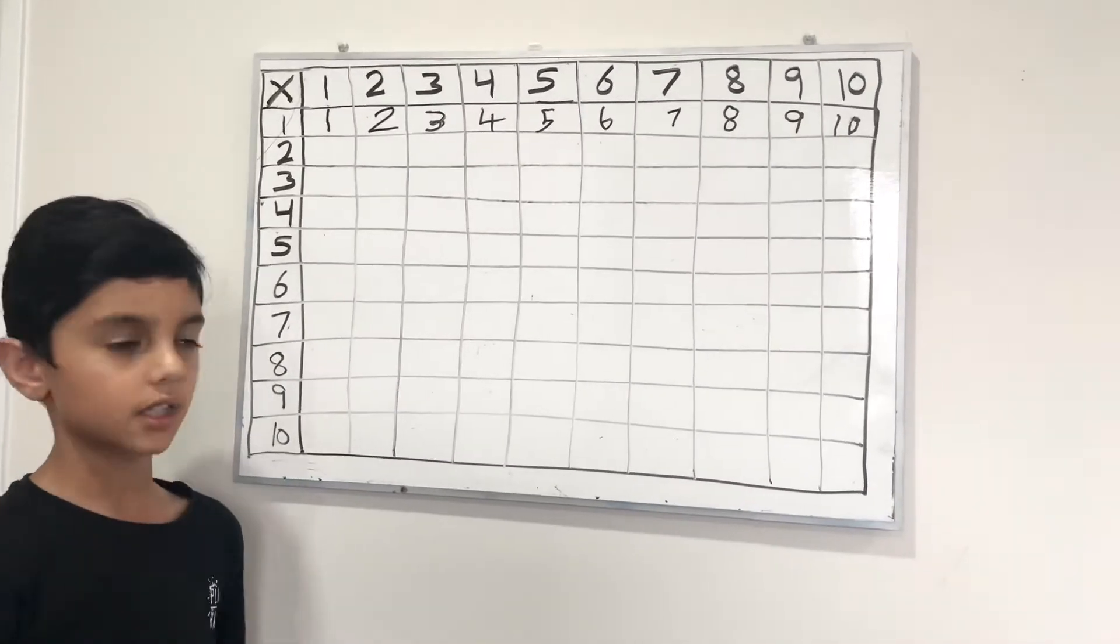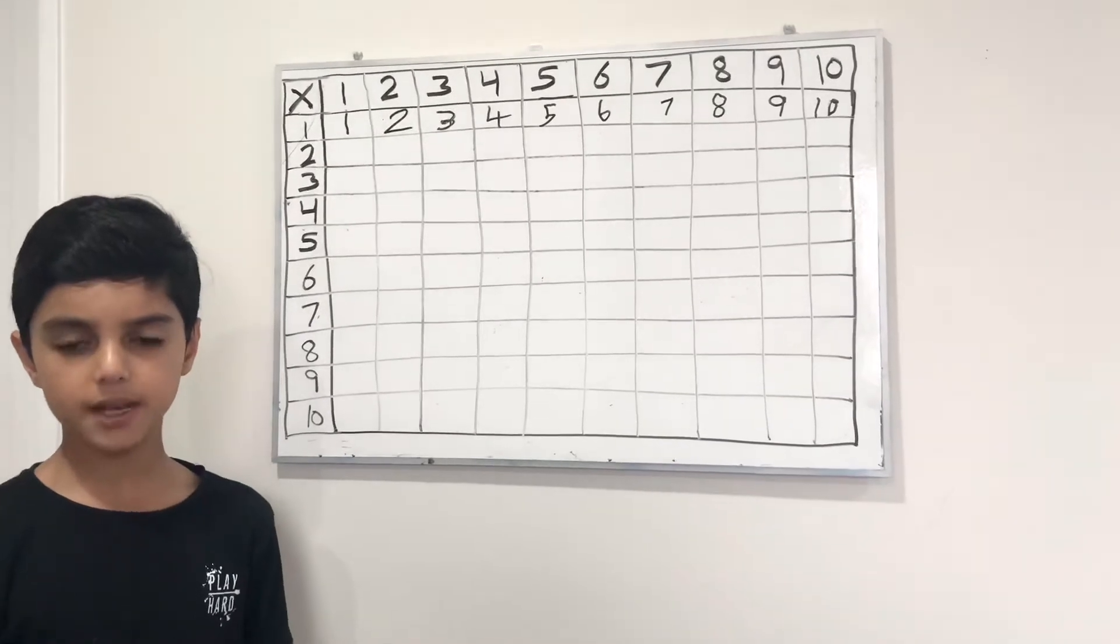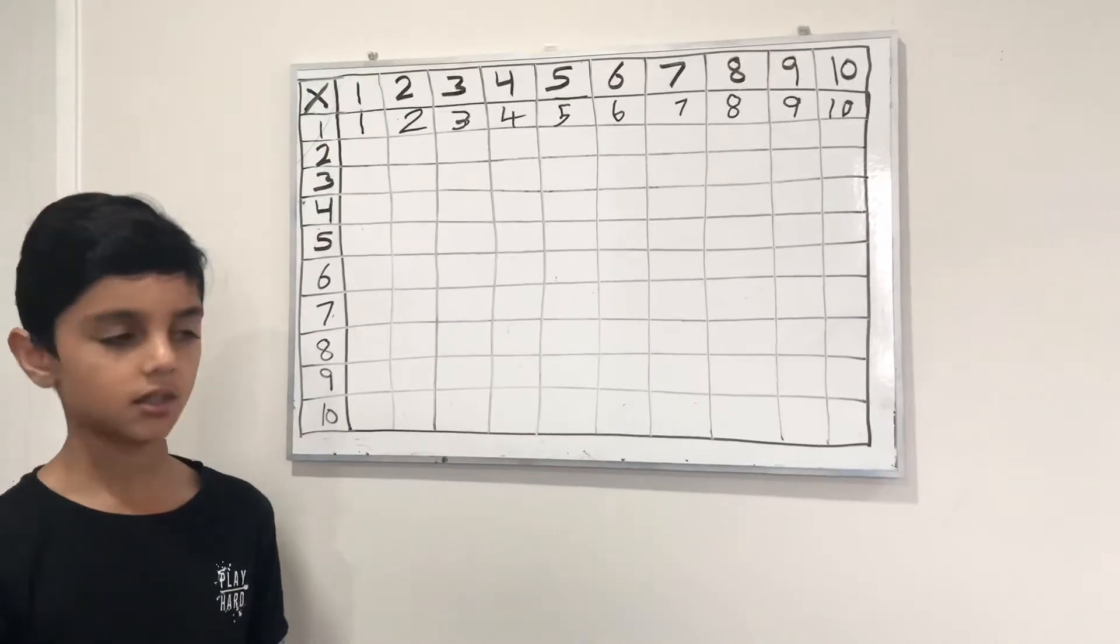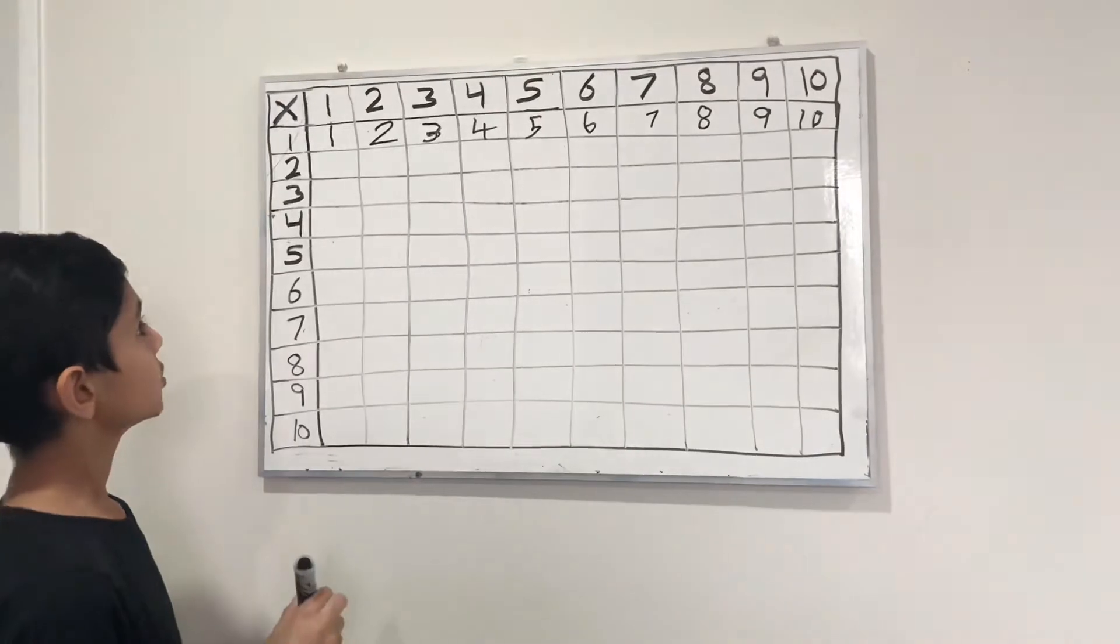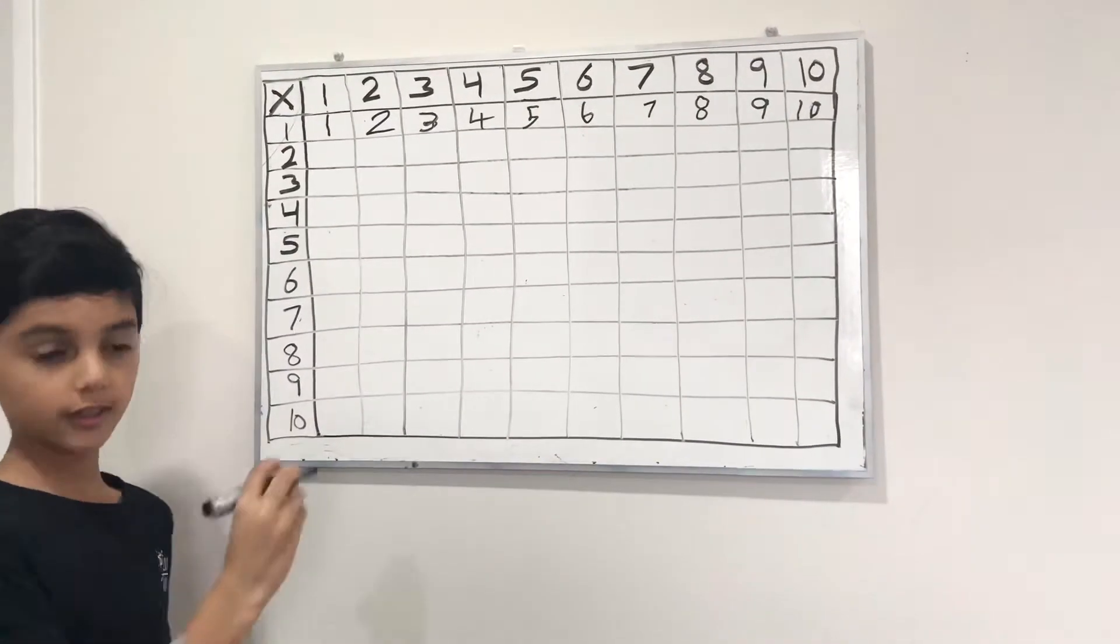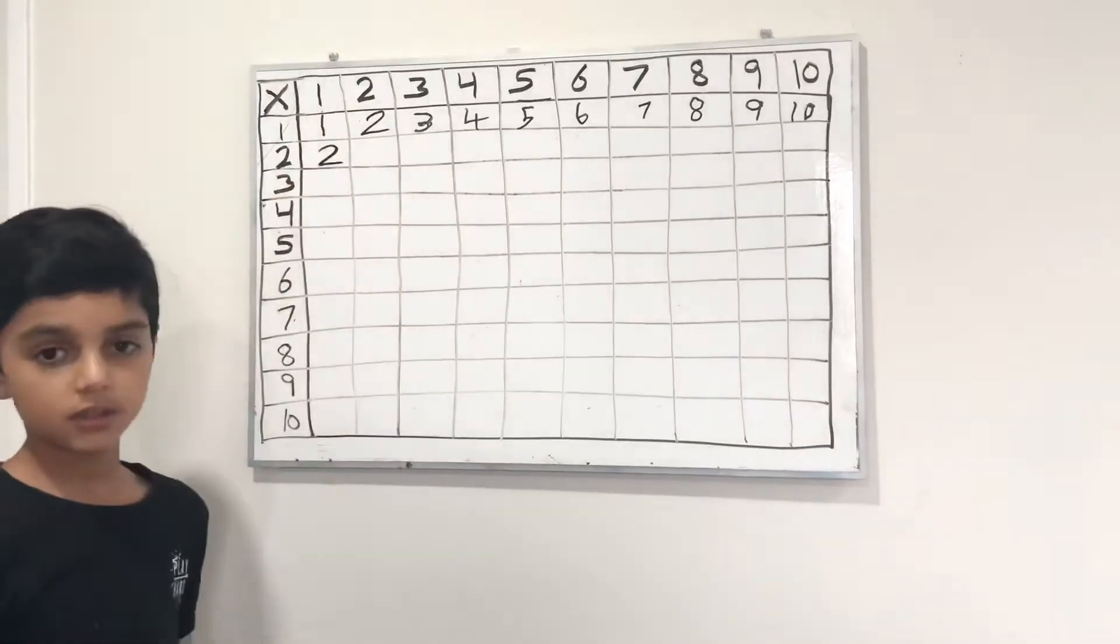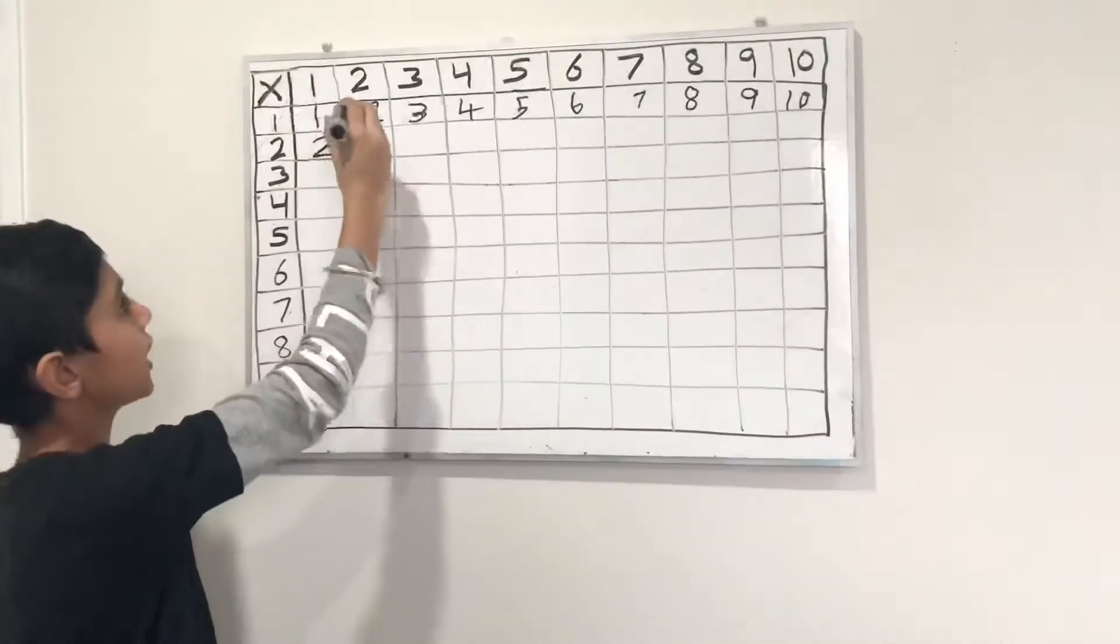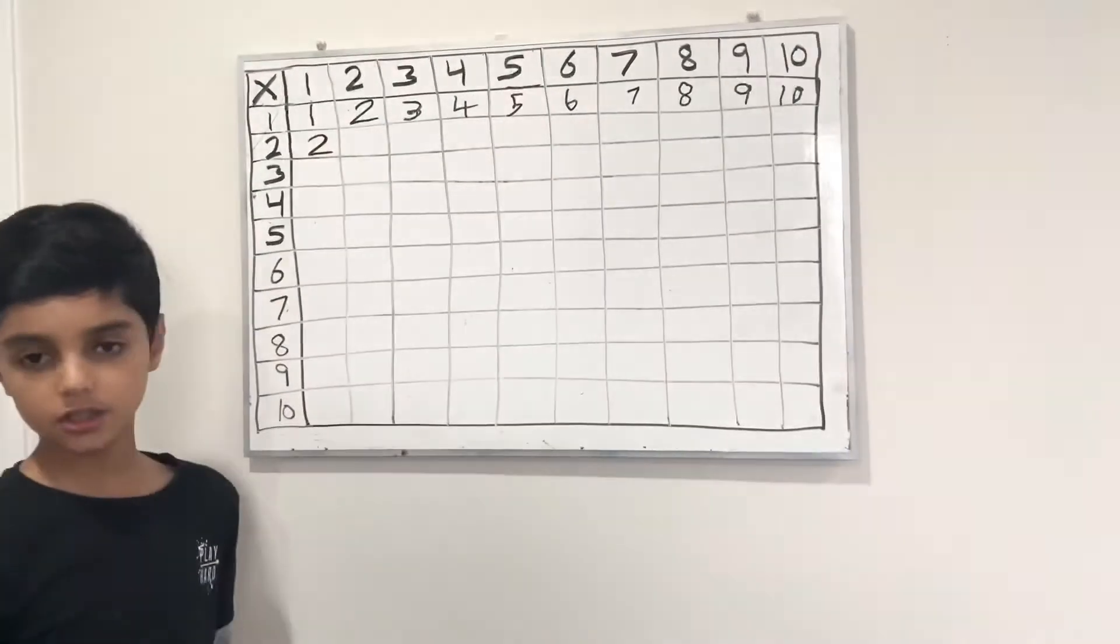Now let's look at the table of 2. In the table of 2, you would add 2 as many times as the number that you are multiplying it with, and same applies with the rest of the numbers in the grid. So 2 times 1 is 2. 2 times 2 is, well, to solve this, 2 times 2 is adding 2 two times, which is 4.